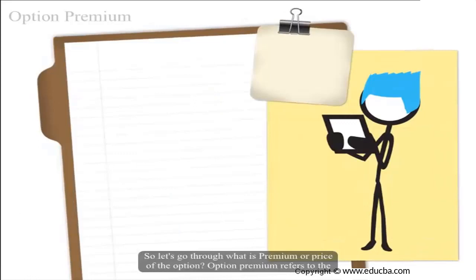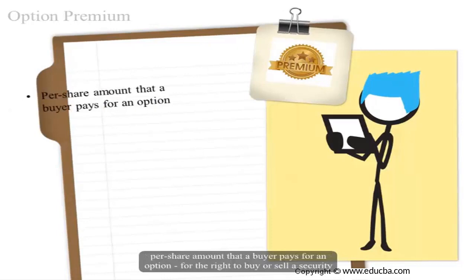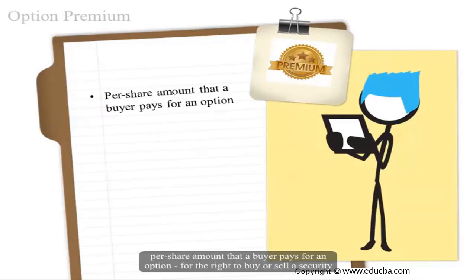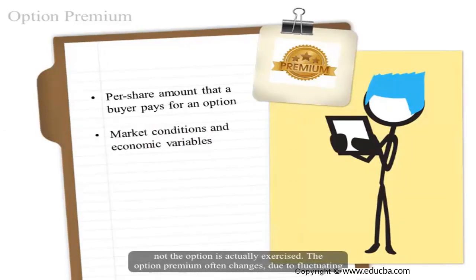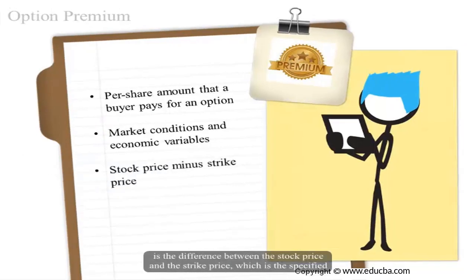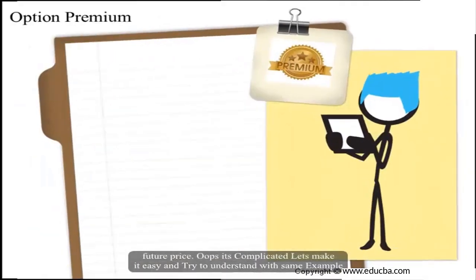Let's go through what a premium, or price of the option, is. Option premium refers to the per-share amount that a buyer pays for the right to buy or sell a security at a specified price in the future. One pays an option premium regardless of whether or not the option is actually exercised. The option premium often changes due to fluctuating market conditions and economic variables. The main thing affecting the option premium is the difference between the stock price and the strike price, known as the specified future price.